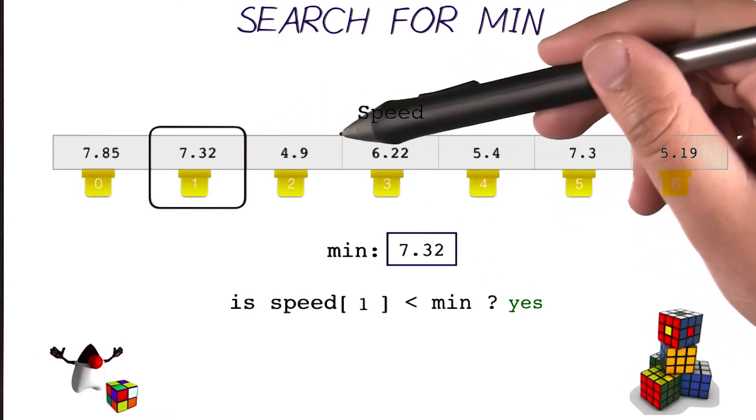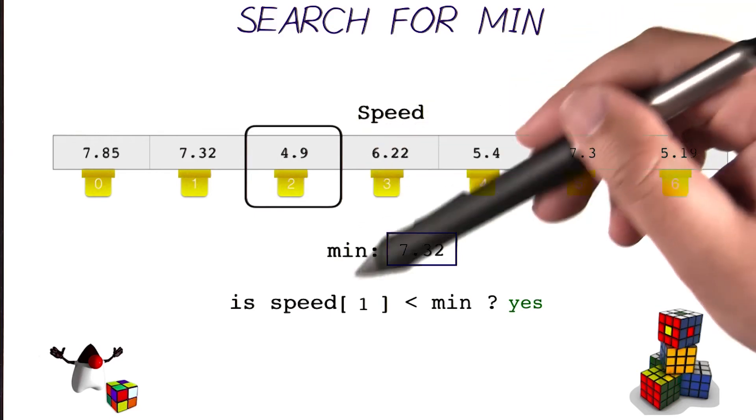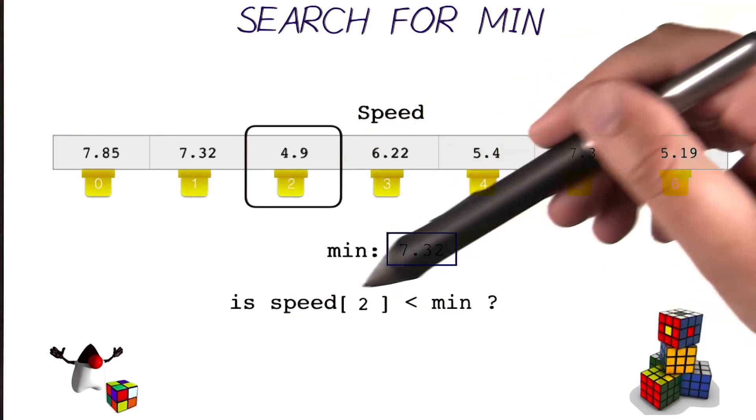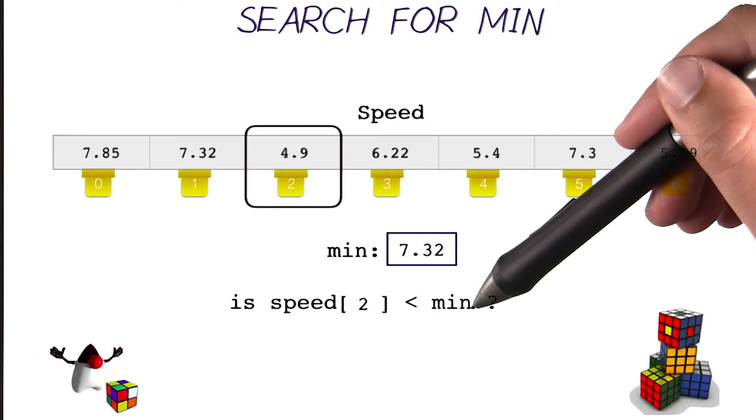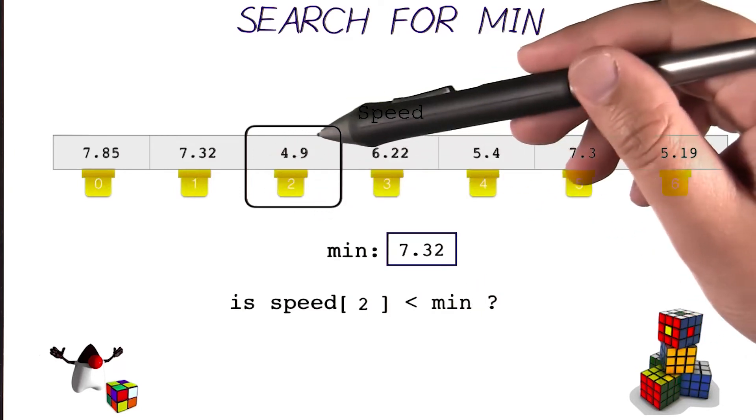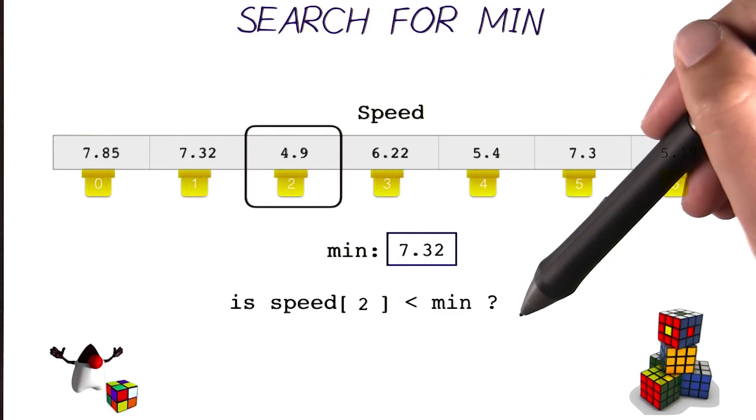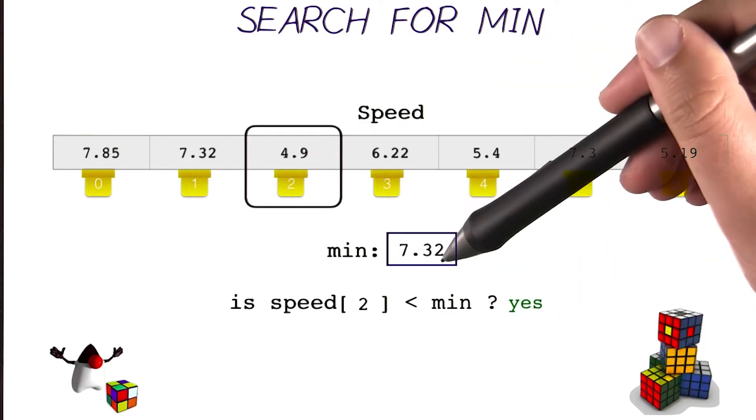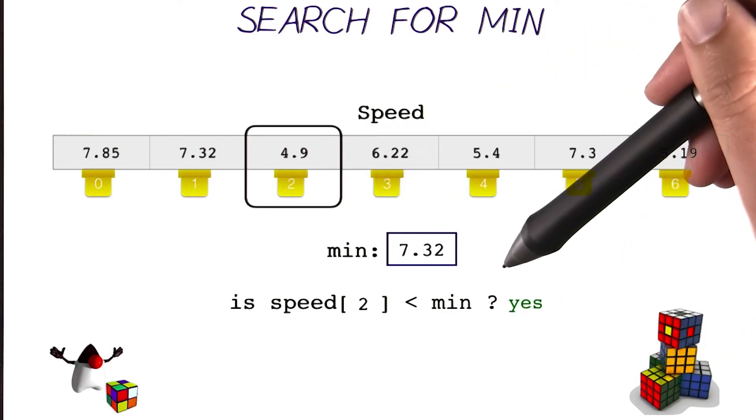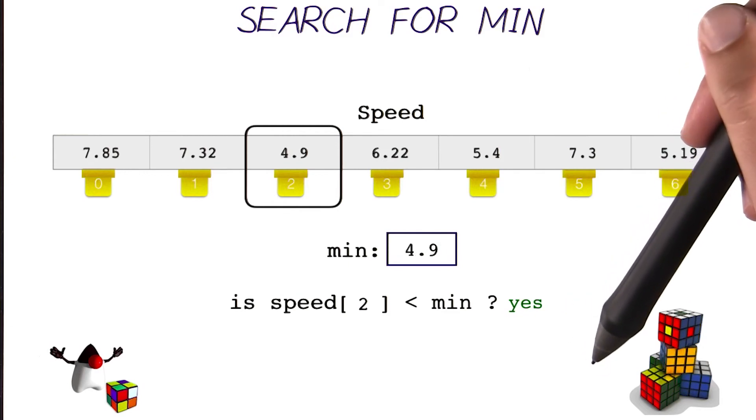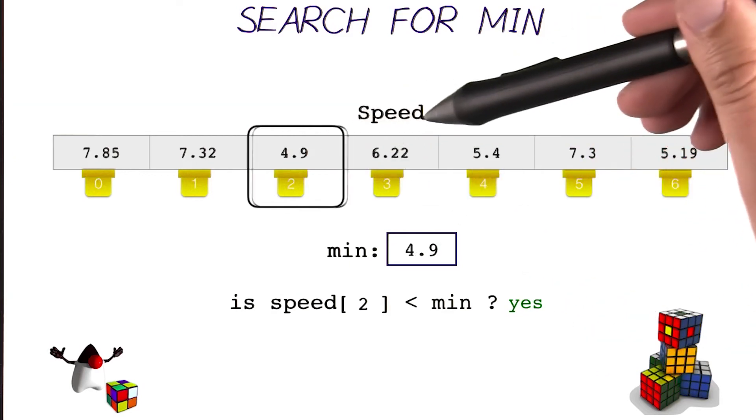And then I move on. And then I ask myself this question again. Is speed of 2 less than the minimum? Speed of 2 here is 4.9, and the minimum is 7.32. Yes, it is. So I update the minimum with that new value here, 4.9. Moving on.